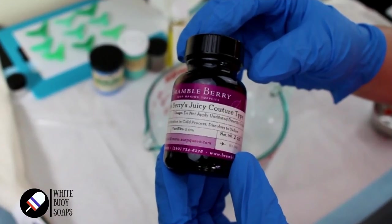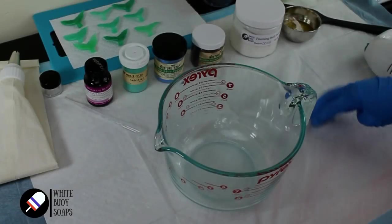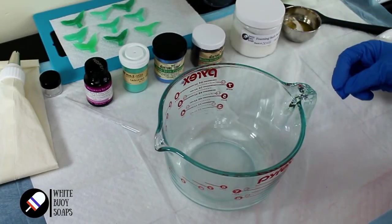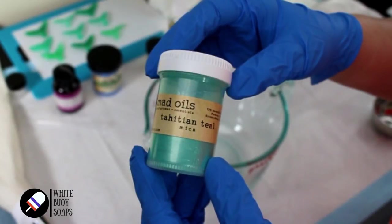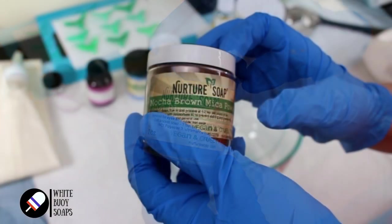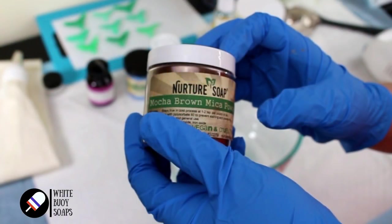This is going to be scented in Bramble Berry's Juicy Couture type. We're using three different colors plus white, which will just be the base uncolored, Tahitian Teal from Mad Oils and Neon Blue pigment and some Mocha Brown.